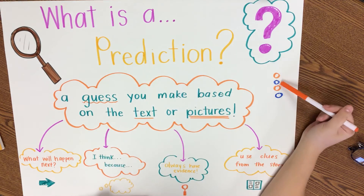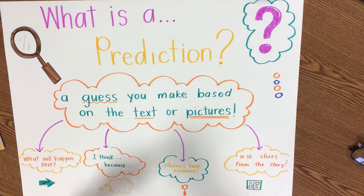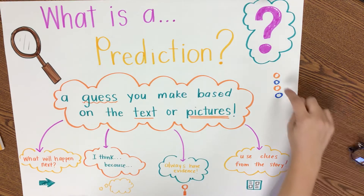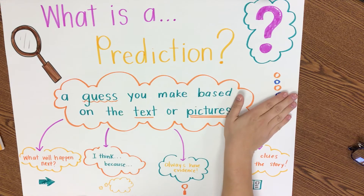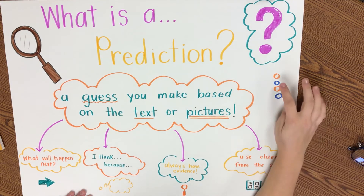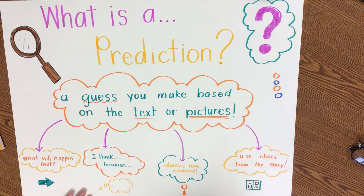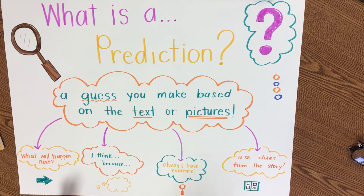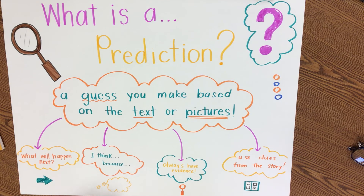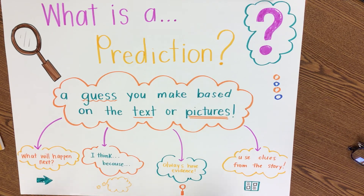Orange, blue, orange, blue — see how I used the evidence, that information I already had, to use it as clues to see what came next. So today, after you listen to me read the story and you tell me the characters, the setting, and the events that happen in the story, make a prediction about what could have happened next in the story.